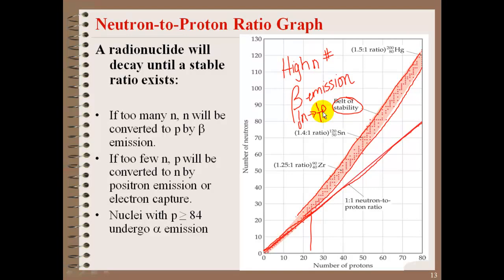Below the belt, you're going to see a high number of protons. Here, you're going to increase your neutron ratio by positron, so our positive electron, or electron capture. This will increase our number of neutrons.